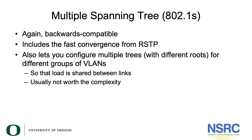Multiple spanning tree, 802.1s, builds on rapid spanning tree and is backwards compatible with both RSTP and traditional spanning tree. It includes the fast convergence from RSTP and allows you to configure multiple trees with different roots for different groups of VLANs. This solves the problem of a blocked link being unused — you can load balance so that some VLANs use one link and other VLANs use another link.